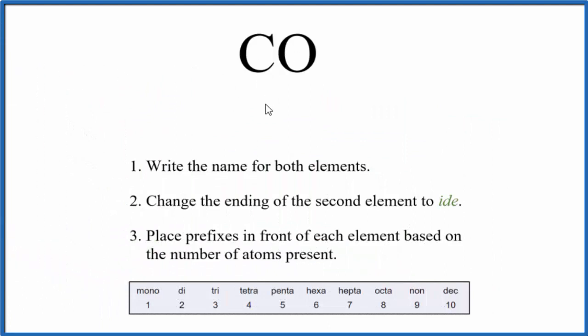Since we have a molecular compound, we're going to use these rules to write the name. First, we write the name for both elements: carbon and oxygen.